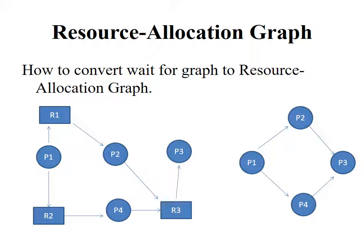In the figure, on the left side, process P2 wants to allocate resource R1, but process P1 already holds resource R1. Now, remove resource R1 and an edge is connected from process P2 directly to process P1. On the right side figure, process P1 is directly connected to process P2. Likewise, removing all resources from the resource allocation graph converts it into a wait-for graph.